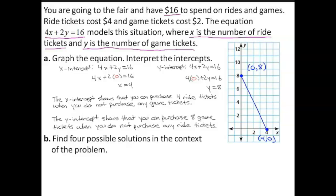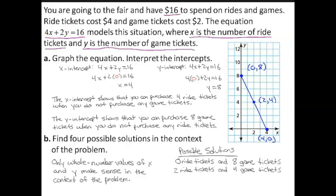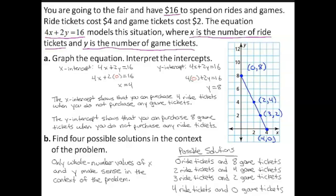Part B: Find 4 possible solutions in the context of the problem. Because you cannot purchase part of a ticket, only whole number values of x and y make sense. Because the y-intercept is (0, 8), one possible solution is 0 ride tickets and 8 game tickets. Notice that (2, 4) is a point on the line segment, so you can purchase 2 ride tickets and 4 game tickets. Notice that (3, 2) is another point on the line segment, so you can purchase 3 ride tickets and 2 game tickets. Because the x-intercept is (4, 0), you can purchase 4 ride tickets and 0 game tickets.